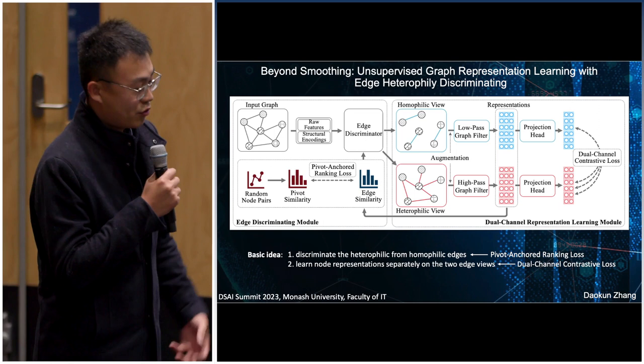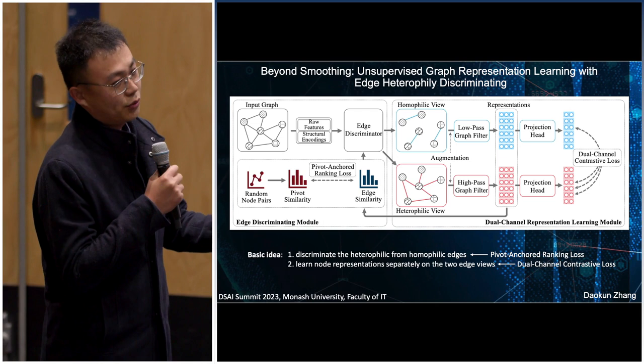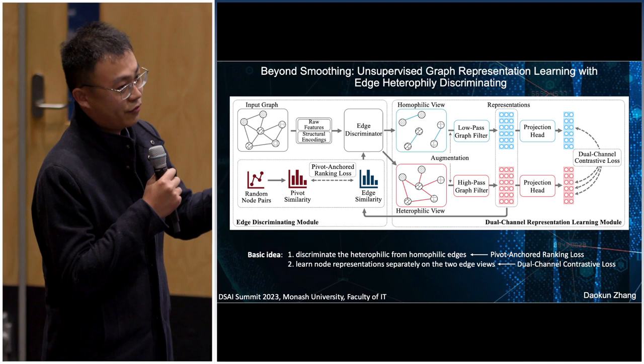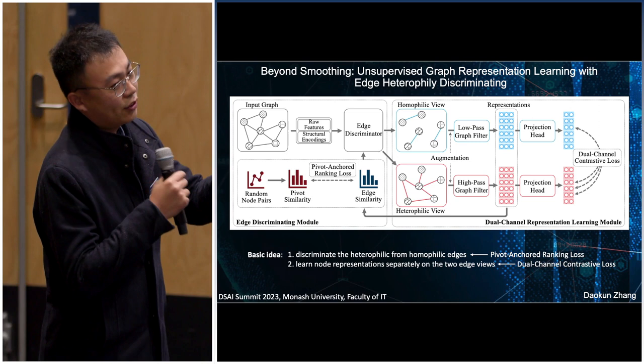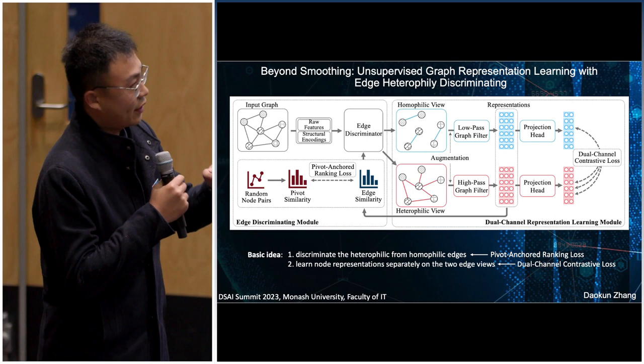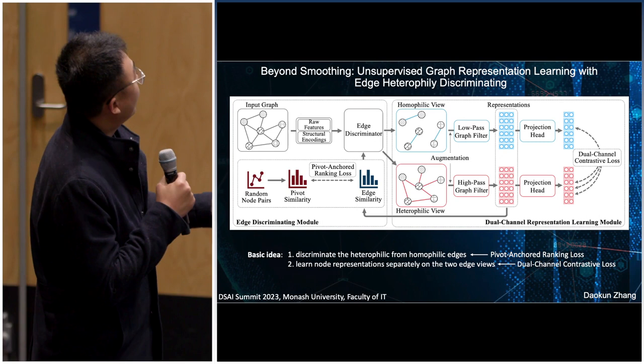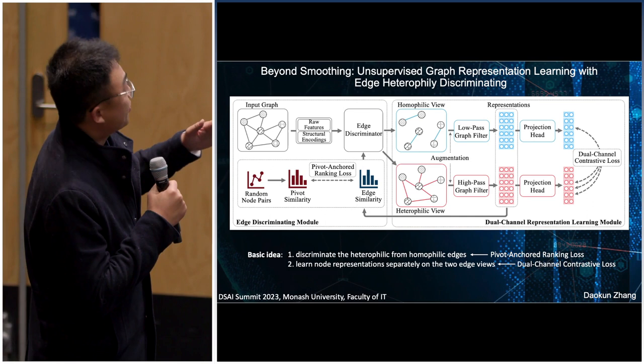However, the success of graph convolutional networks relies on the homophily assumption — that two nodes connected by an edge should have similar features and similar representations. In the real world, connected nodes might have very different representations. We call edges connecting very different nodes 'heterophily edges.' We use an edge discriminator to discriminate between homophily edges and heterophily edges.